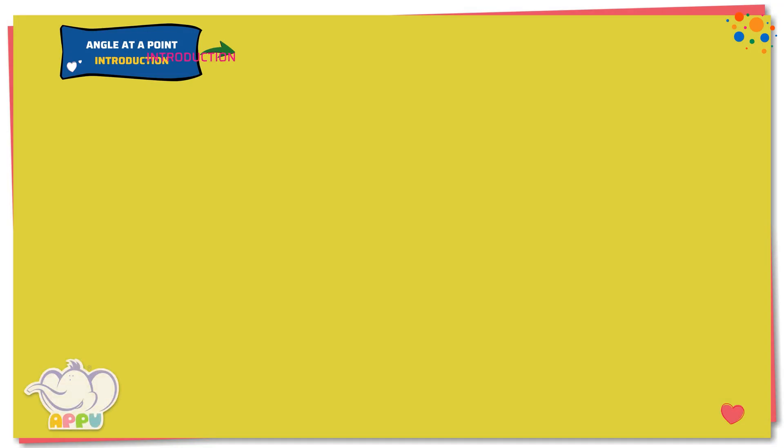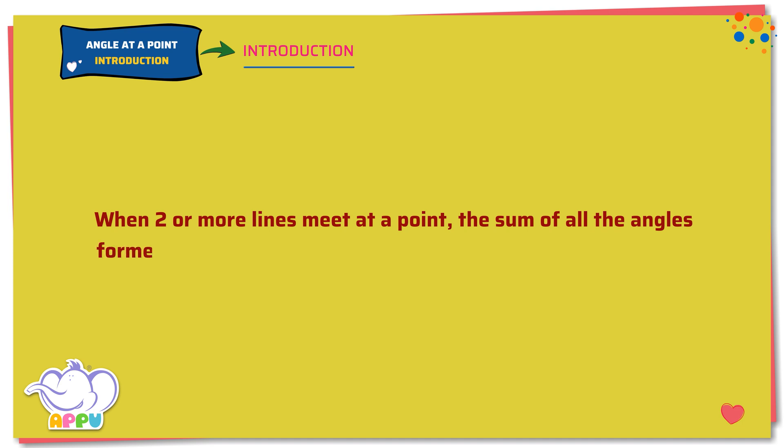Angle at a Point - Introduction. When two or more lines meet at a point, the sum of all the angles formed around the point is always equal to 360 degrees.